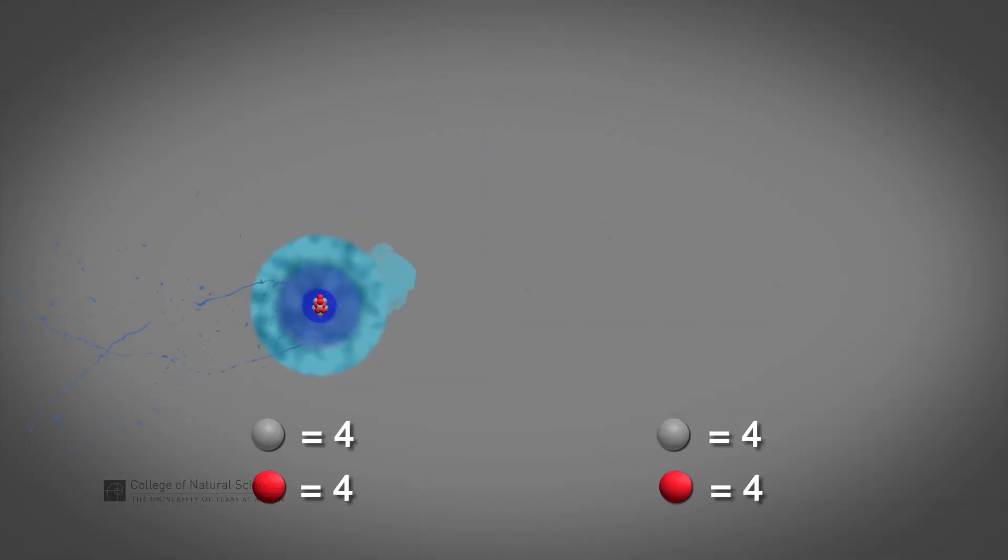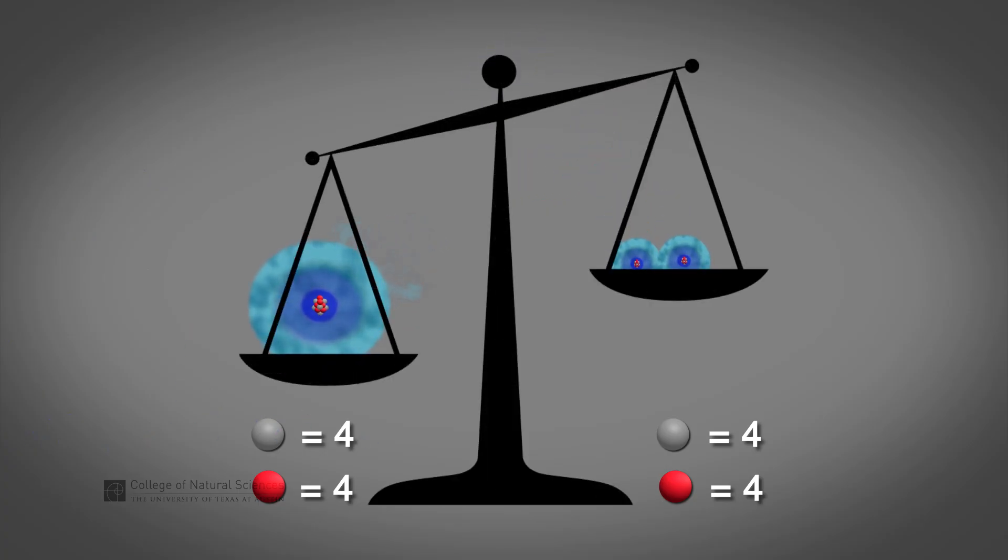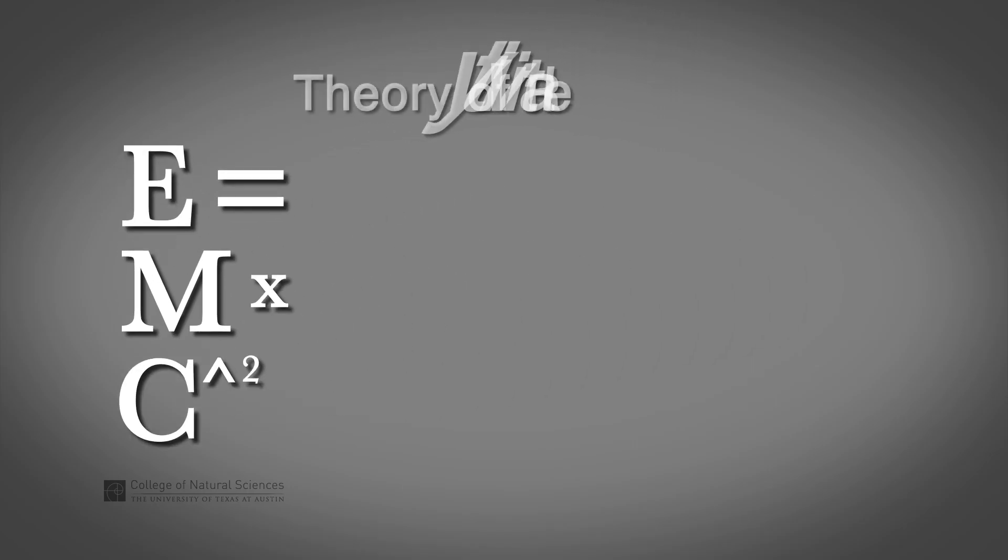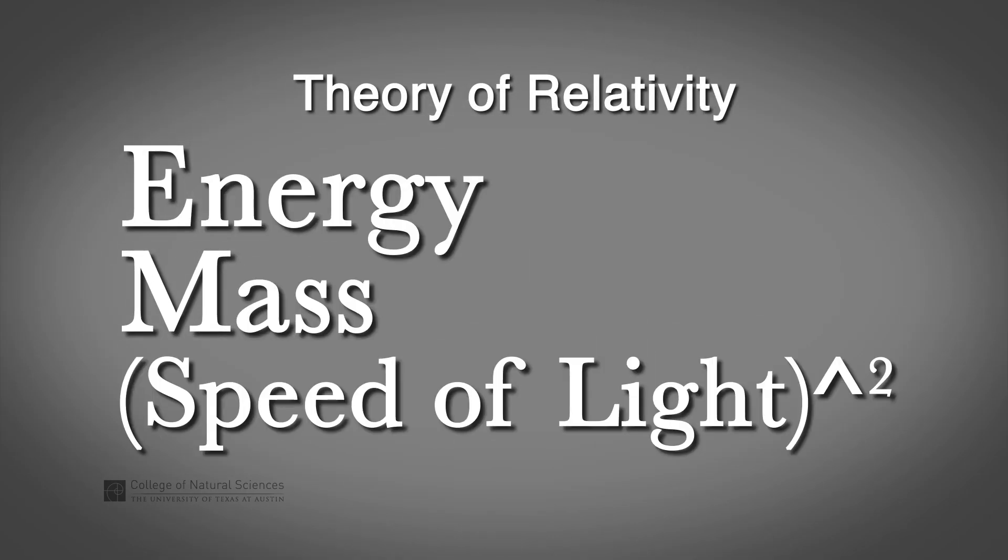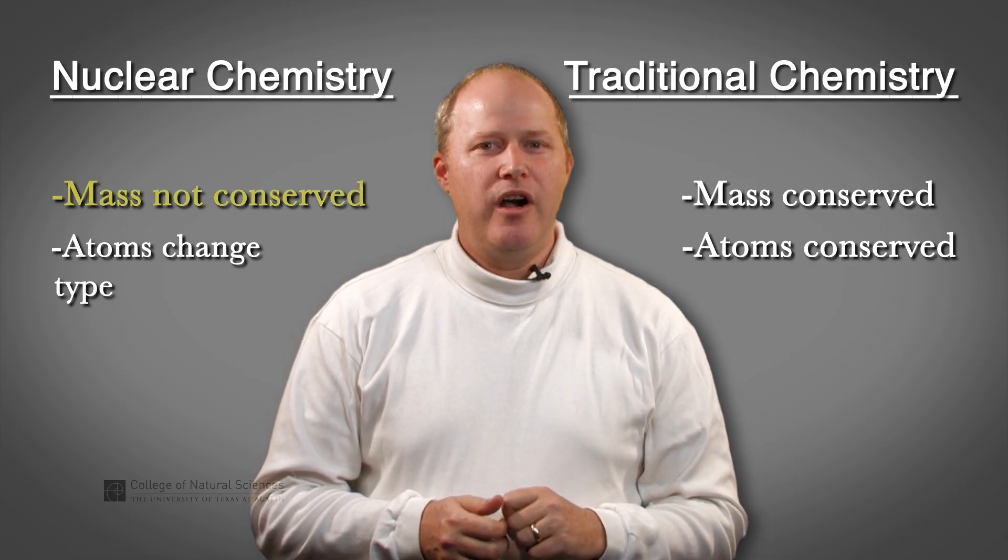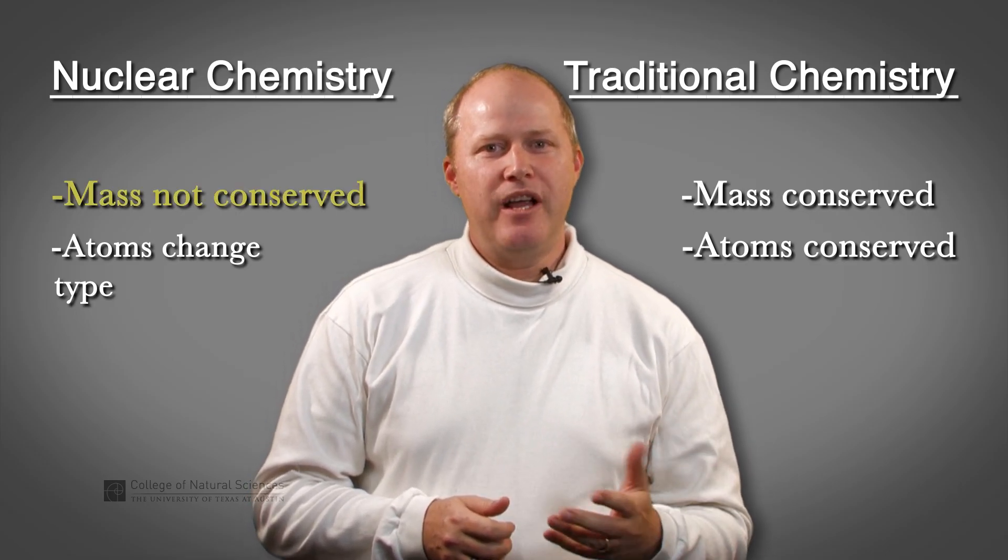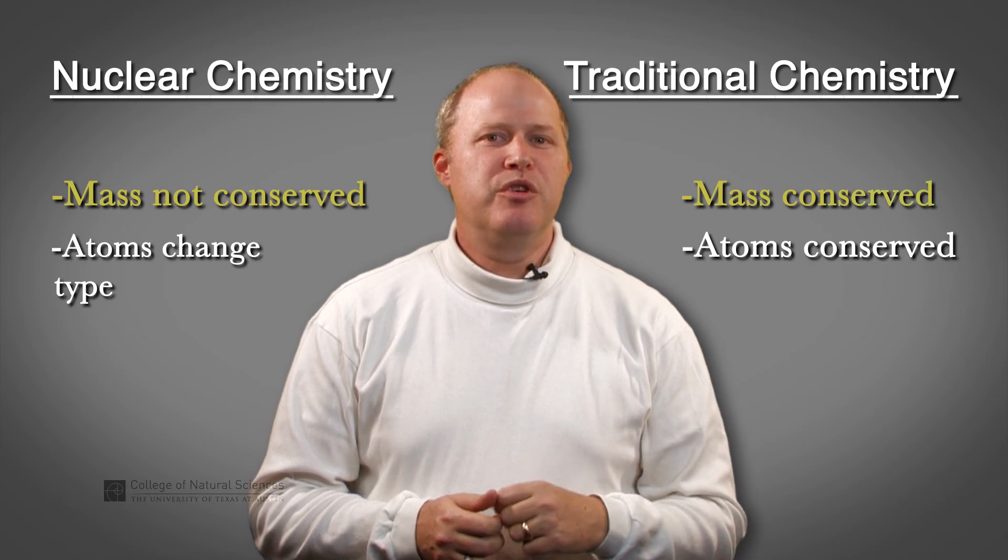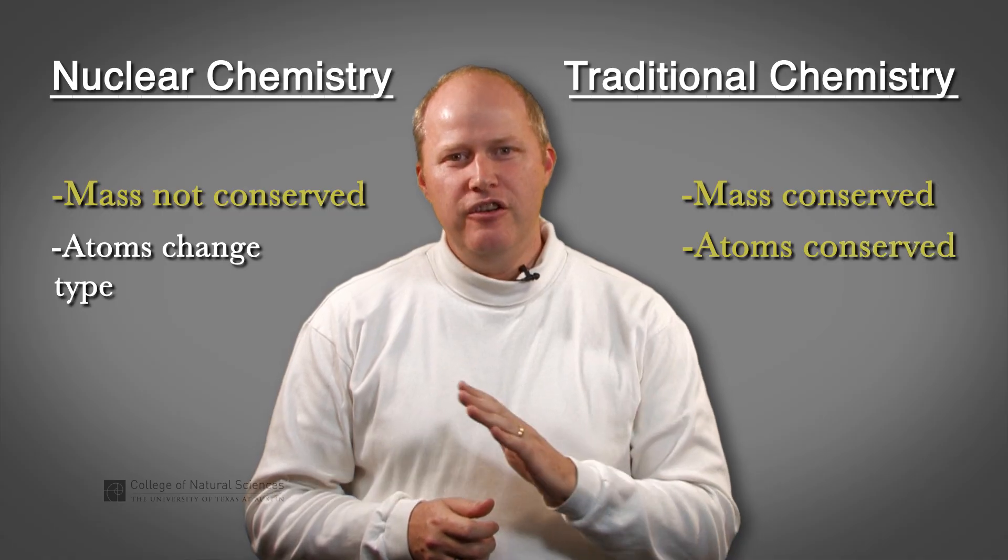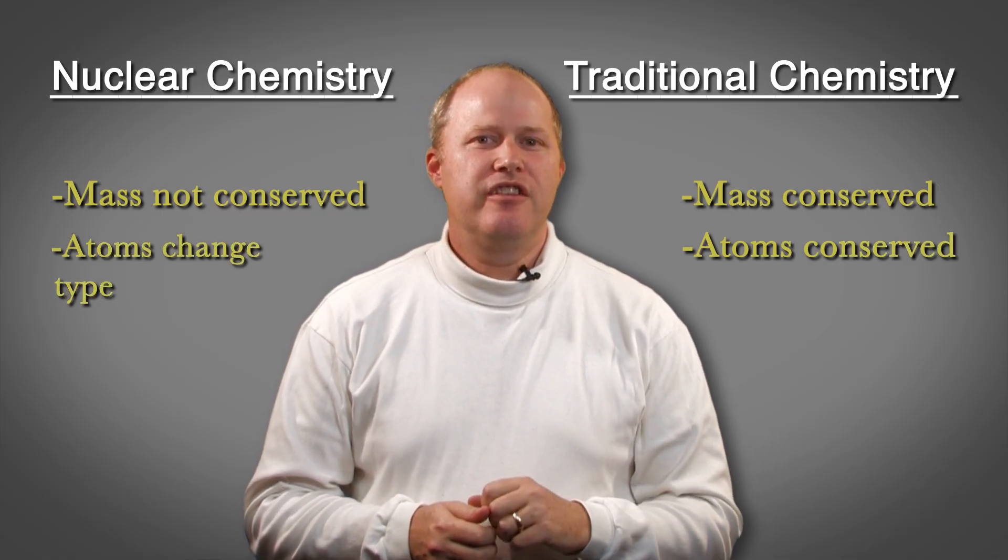Because these energy changes are so big, we actually get a measurable change in the mass between the products and the reactants in the reaction. That's because mass and energy are related by the theory of relativity. Nuclear reactions don't conserve the mass, where we typically say chemical reactions do. This is a big difference between traditional chemistry, where the atoms are always conserved, and nuclear chemistry, where the atoms change their type.